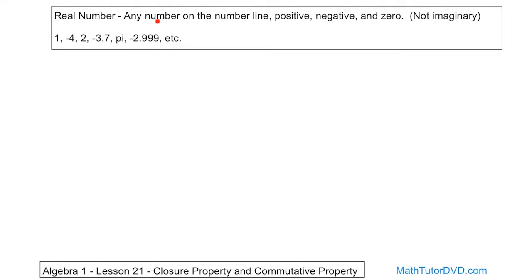Basically it's any number you can possibly think of, except imaginary numbers. We haven't talked at all about imaginary numbers, but you need to be aware that the reason they're called real numbers is because these are the real numbers — the tangible numbers that you can touch. You also have imaginary numbers that we're going to talk about farther along in algebra. Those are very useful also. Just because they're imaginary, don't let that fool you — they're extremely useful. But they're not the types of numbers you put on the number line that go off to positive infinity and then off to negative infinity.